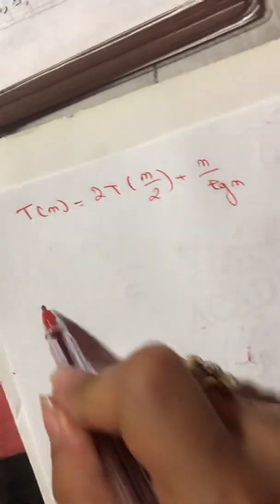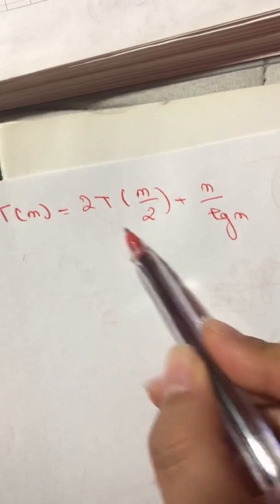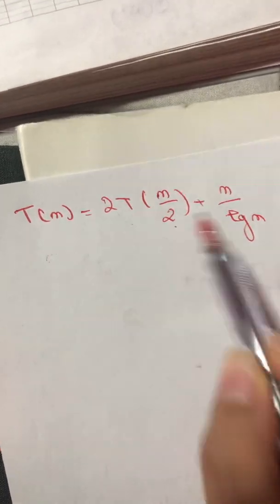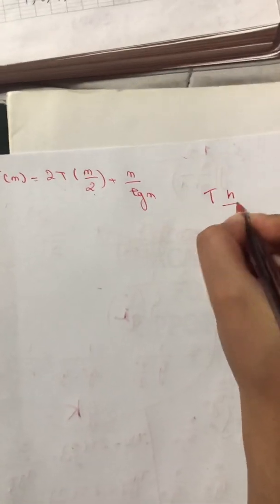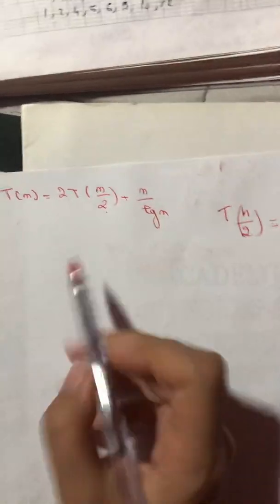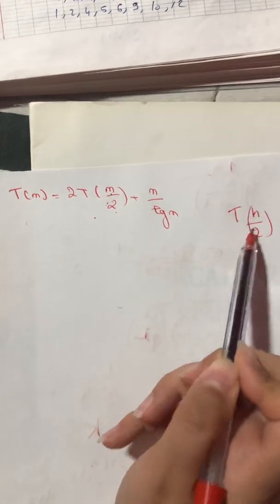Let's start. I prefer always to solve the T(n/2) aside. So T(n/2) equals—I have to divide every time I see n, I have to divide it by 2.